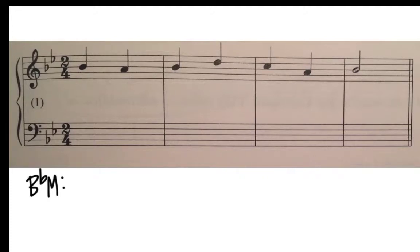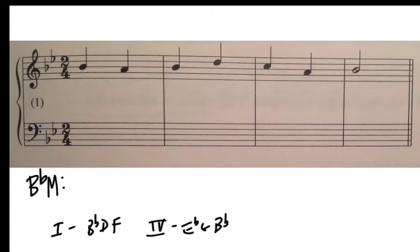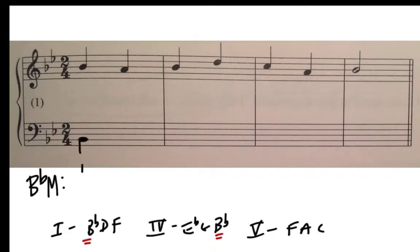If this is B♭ major, in your mind's eye you're imagining the tonic chord is spelled B♭ D F, the subdominant chord is spelled E♭ G B♭, and the dominant chord is spelled F A C. We have a B♭ in the soprano, which could be either the root of the tonic chord or the fifth of the subdominant chord. It's nice to start a piece strong on tonic, so let's put a B♭ in our bass line and call this a tonic chord in B♭.